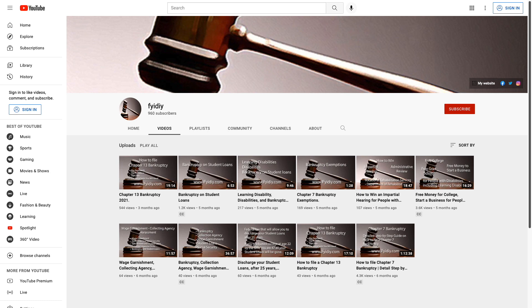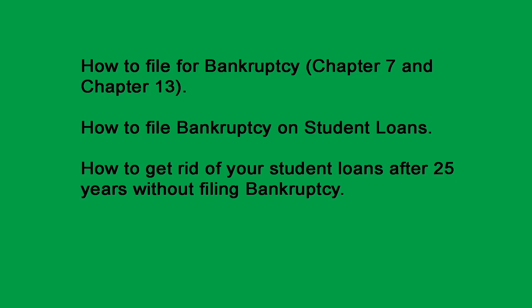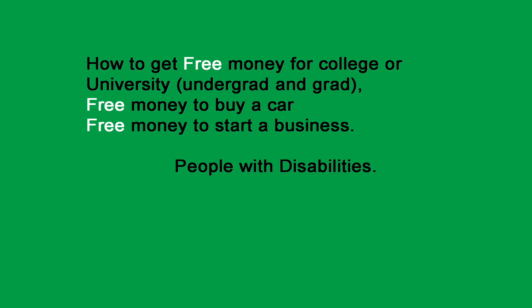Plus, I have another YouTube channel. However, these videos are only for the United States, but for people who do not live in the United States, you might know someone who these videos could help. This channel has instructional videos on how to file for bankruptcy and how to file for bankruptcy on student loans. How to get rid of your student loans after 25 years without filing bankruptcy. There are over 1 million people over 60 years old who are still paying off their student loans. If you did this when you first got out of college or university, then when you turn 47 years old, your student loans could be gone. This law has been around since 1972. Plus, this YouTube channel has videos on how to get free money for college or university — including undergrad and grad school — how to get free money to buy a car, how to get free money to start a business, and much more.